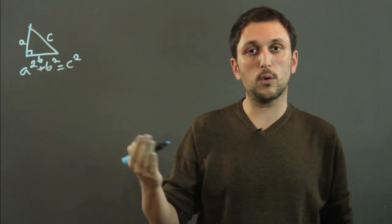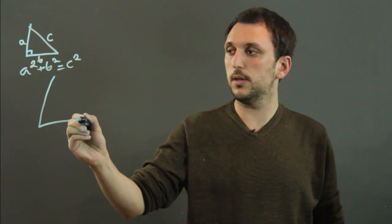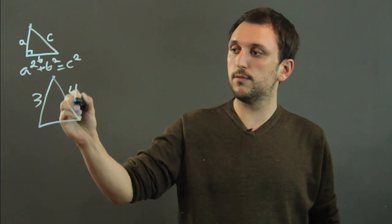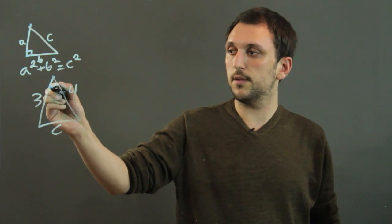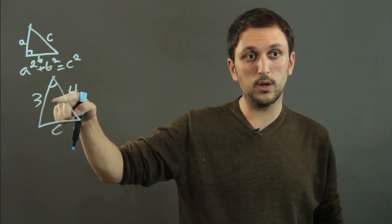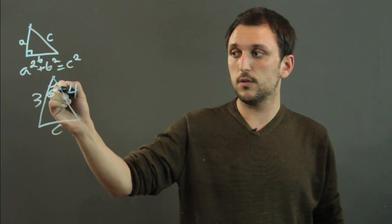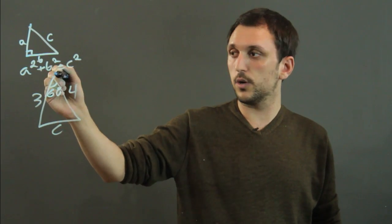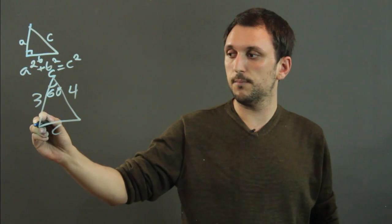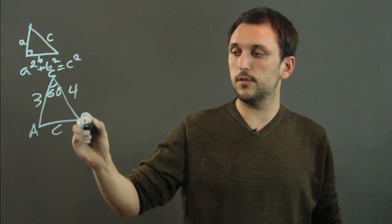But if we have an isosceles or a scalene triangle for example let's say we have one that's 3, 4, and c and this angle here we would need to know in order to find this third side so let's say it's 60 and we're going to call this angle here c this is going to be a and this is going to be b.